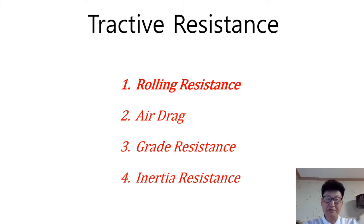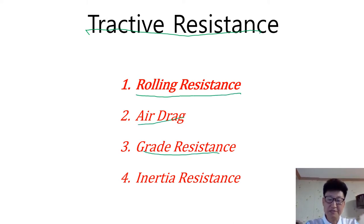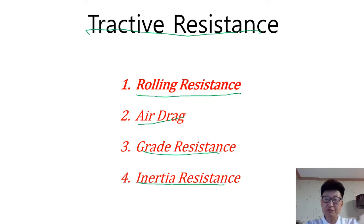There are various types of tractive resistance: rolling resistance, air drag, grade resistance, and inertial resistance. All these tractive resistance types are intrinsically related to longitudinal slip, because we need drive torque to overcome the tractive resistance.